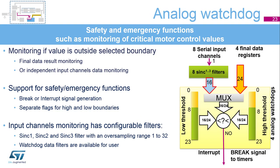The analog watchdog monitors sampled analog data to see if it remains within selected high and low thresholds. The input to the analog watchdog function can come from the result of the final converted data or directly from the input serial channels through a configurable filter. If data exceeds the allowed threshold, an interrupt can be invoked or a break signal generated. If an interrupt is invoked, the software decides the next actions. The break signal can perform a predefined safety action directly in hardware — for example, it can stop a timer which controls the motor. There are separate high and low threshold levels and separate flags for each threshold.